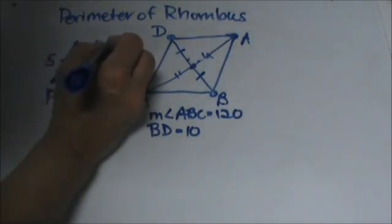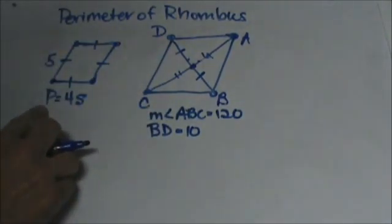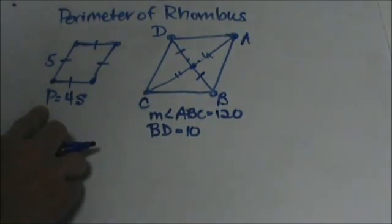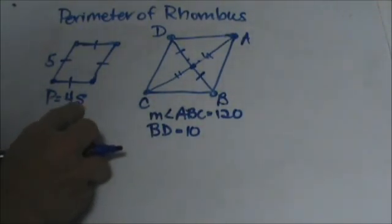We know that all four sides are the same so our perimeter formula is just like a square. We just multiply 4 times s where s is the length of the sides because we have four congruent sides.